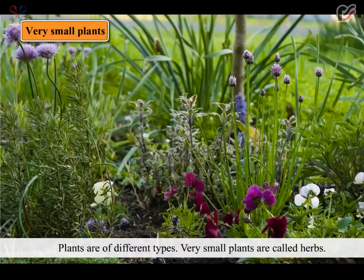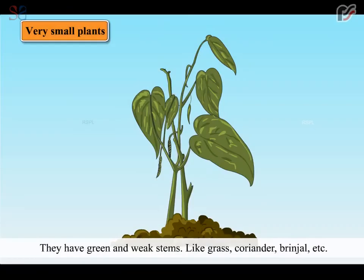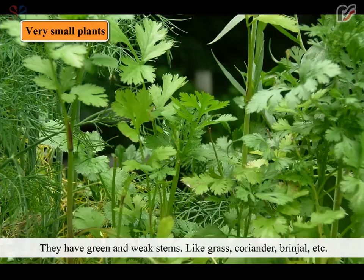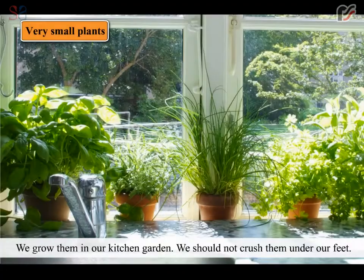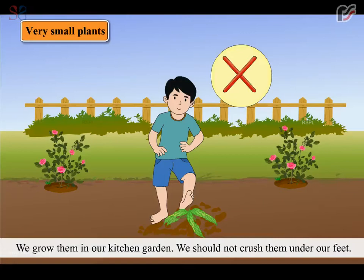Plants are of different types. Very small plants are called herbs. They have green and weak stems. Like grass, coriander, brinjal etc. We grow them in our kitchen garden. We should not crush them under our feet.